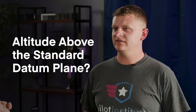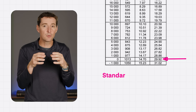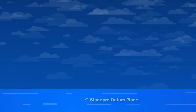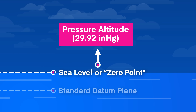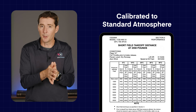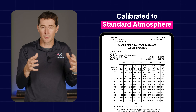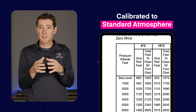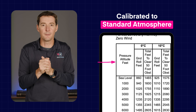The standard datum plane is just the level in the standard atmosphere where the pressure is exactly 29.92 inches of mercury. So pressure altitude is your height above that imaginary zero point. When the manufacturer creates the performance charts for your airplane, they base them on the standard atmosphere, not actual real-world weather. That's why those charts use pressure altitude as a baseline — it gives everyone the same starting point.